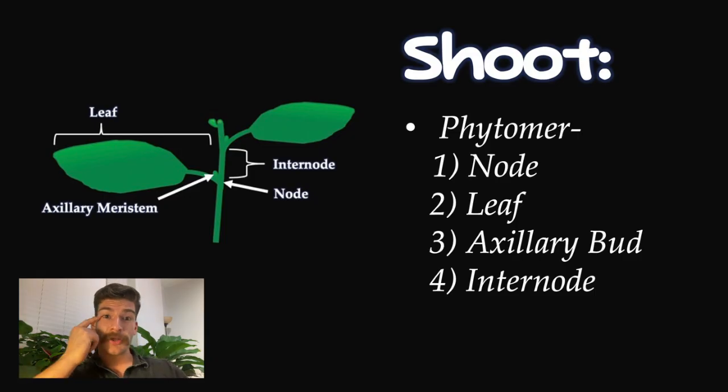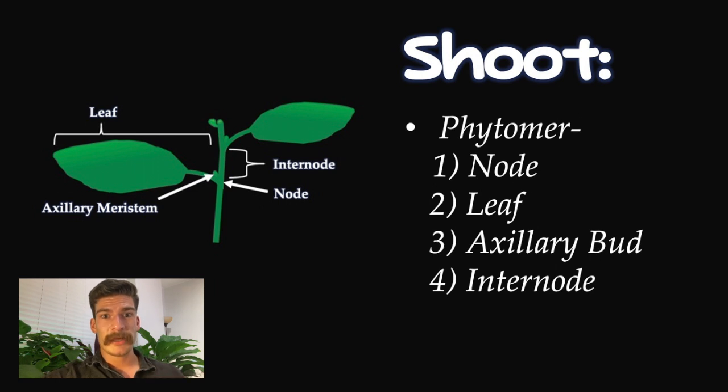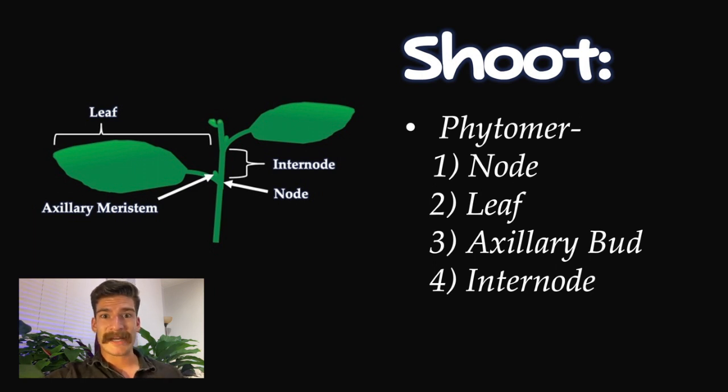With plant morphology, we normally don't look at the roots to identify or understand plants, so the important thing is really the shoots. Going forward, we're only going to be discussing shoots. Looking at the shoot, it's made of a thing called a phytomer — a repeating unit of four things: the node, the leaf, the axillary bud, and the internode.